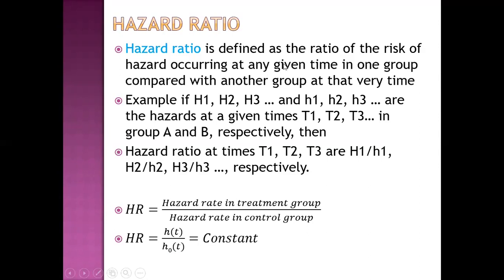Hazard ratio is defined as the ratio of the risk of a hazard occurring at any given time in one group compared with another group at that same time. Hazard ratio equals the hazard rate in the treatment group divided by the hazard rate in the control group. In most models, especially the exponential model and Cox Proportional Hazard Model, we assume that the hazard ratio is constant over time.